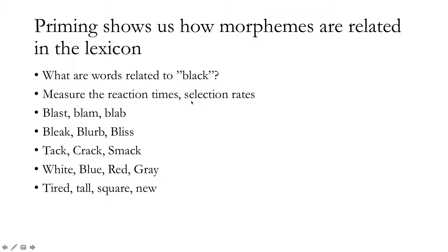Some participants will choose words like 'blast,' 'blam,' or 'blab' as being related to 'black.' This is probably because there's a strong phonological relationship — both the onset consonants and the nucleus are exactly the same: the phoneme /b/, the phoneme /l/, the phoneme /a/ in the English lexicon. So these words are sort of ready to go when you hear the word 'black.' Even words that don't share the nucleus but still share the onset — like 'bleak,' 'blurb,' or 'bliss' — will be retrievable and judged as related to 'black,' although their relationship isn't quite as strong.